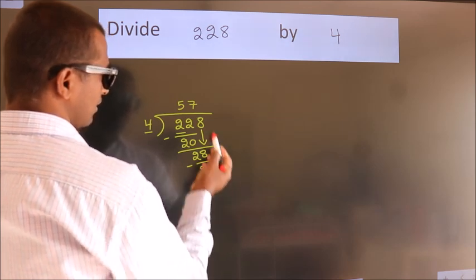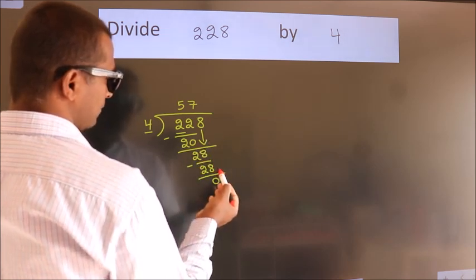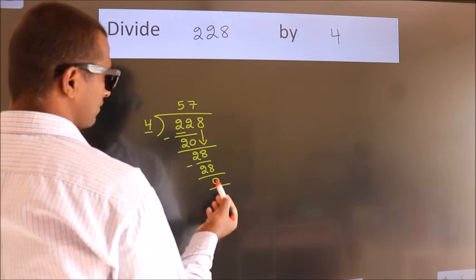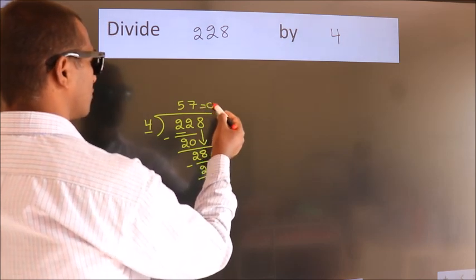After this, no more numbers to bring it down. And we got remainder 0. So this is our quotient.